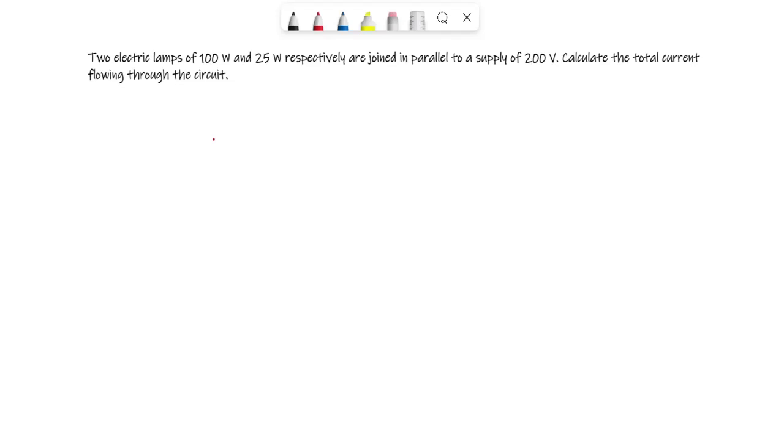The problem says: two electric lamps of 100 watt and 25 watt respectively are joined in parallel to a supply of 200 volt. Calculate the total current flowing through the circuit. In this case, you can see P1 is 100 watt and P2 is 25 watt.